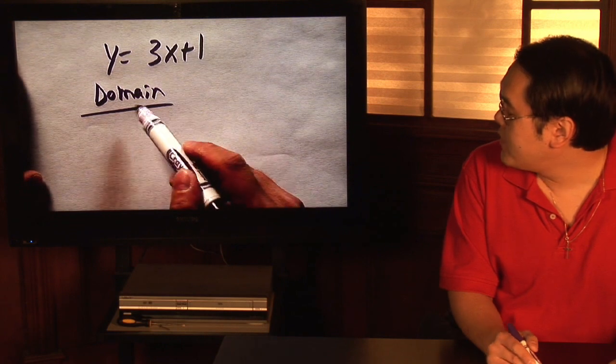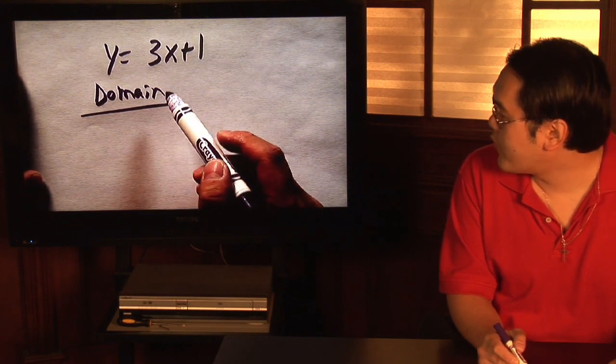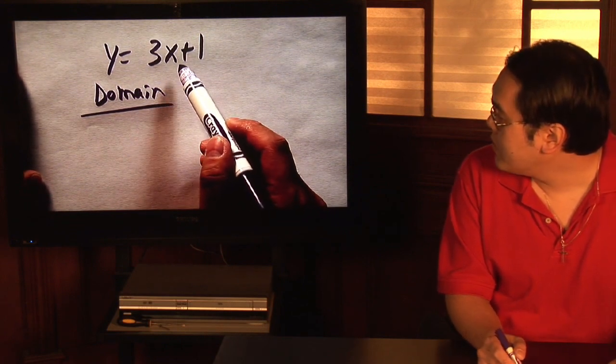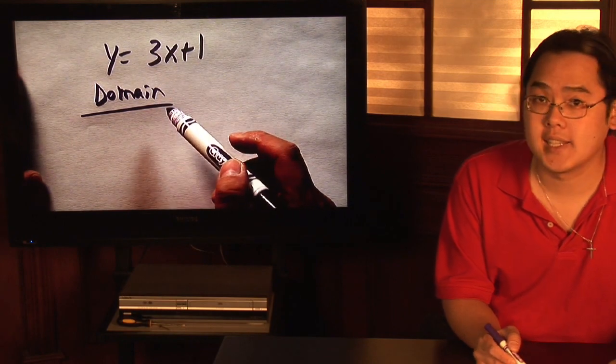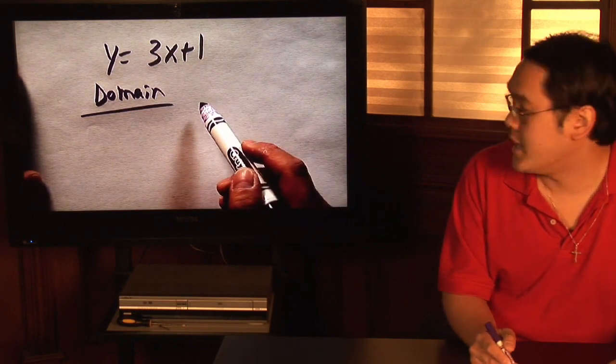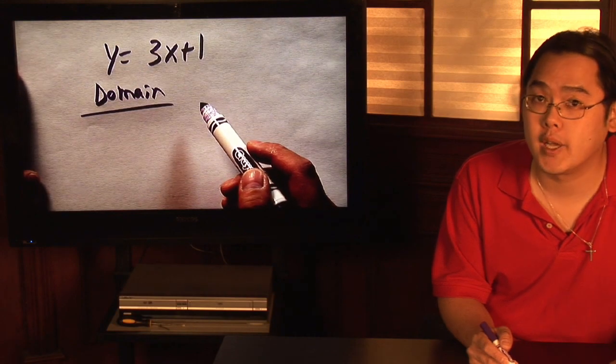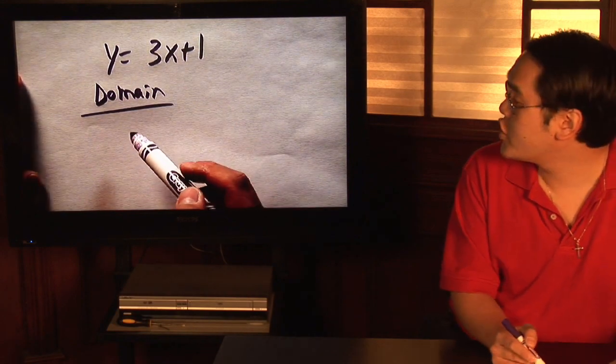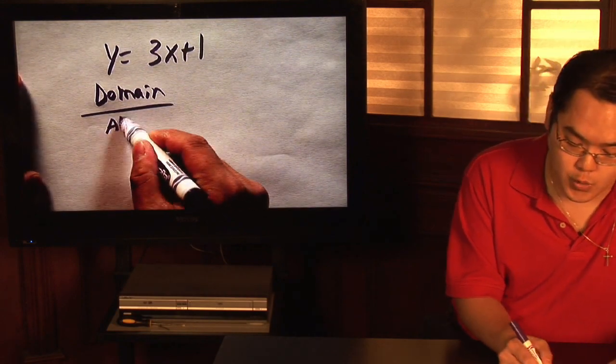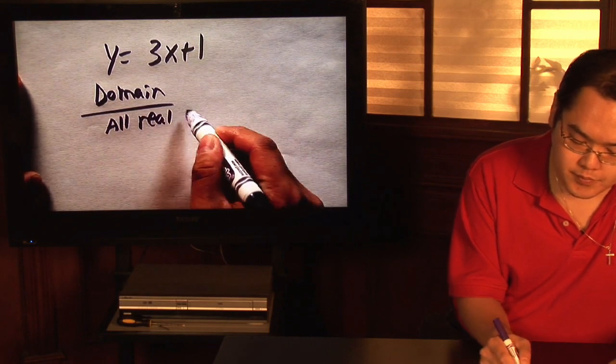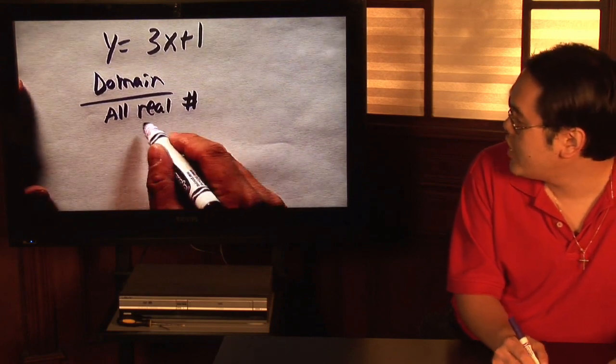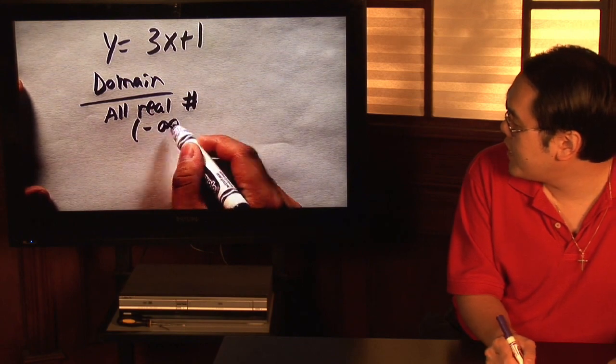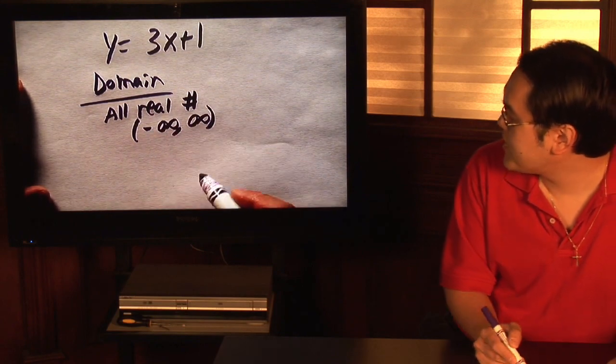In terms of domain, you want to figure out what's allowed for x. Because it's 3x plus 1, you might recognize this as a line. You could figure out that in a line, any number is possible to plug in for x. So a short answer for domain is all real numbers, or if you're familiar with interval notation, you will say negative infinity to positive infinity.